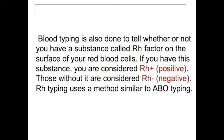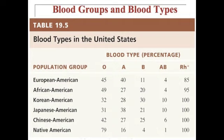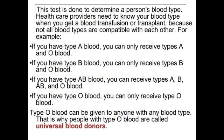Blood typing is also done to determine whether you have the Rh factor on the surface of your red blood cells. If you have this substance, you are Rh positive; if you do not, you are Rh negative. Rh typing uses a method similar to ABO typing. It is important that health care providers know your blood type, because not all blood types are compatible. For example, if you have type A blood, you can only receive type A and type O blood.